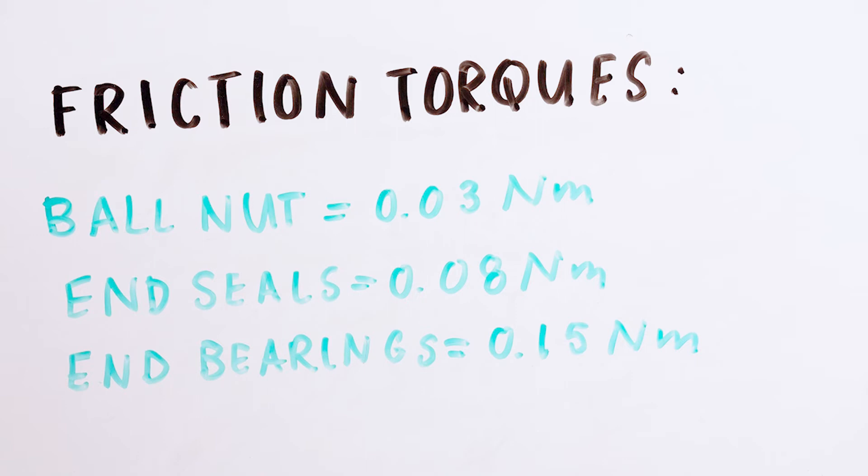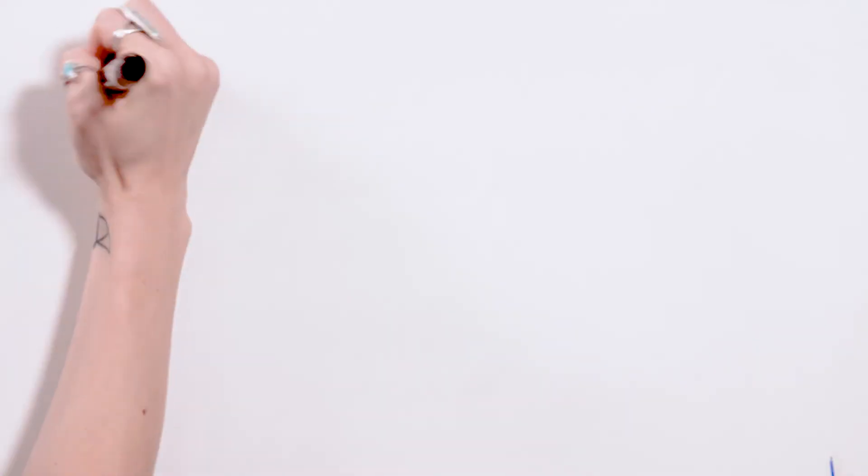For our example, the ball nut has a friction torque of 0.03 newton meters, the end seals have a friction torque of 0.08 newton meters, and the end bearings have a friction torque of 0.15 newton meters.